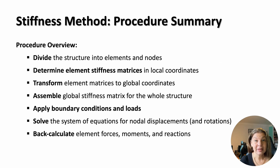Now that we've covered the fundamental concepts, here's a summary of the stiffness method procedure. First, we divide the structure into elements and nodes. Next, we determine each element's stiffness matrix in its local coordinates, then transform them into the global coordinate system. All element matrices are assembled into the global stiffness matrix. Boundary conditions and loads are then applied, which allows us to solve the global system of equations for nodal displacements and rotations. Finally, we use these results to calculate the element forces, moments, and support reactions. This structured sequence ensures we can handle even very complex indeterminate structures in a systematic and reliable way.